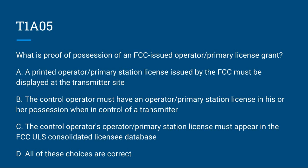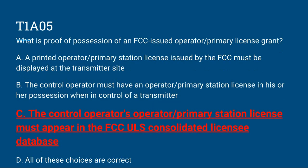T1A05: What is proof of possession of an FCC-issued operator primary license grant? A, a printed license must be displayed at the transmitter site; B, the control operator must have the license in possession when in control of a transmitter; C, the control operator's license must appear in the FCC ULS Consolidated License database; or D, all of these choices are correct. The correct answer is C, the control operator's license must appear in the FCC ULS Consolidated License database.